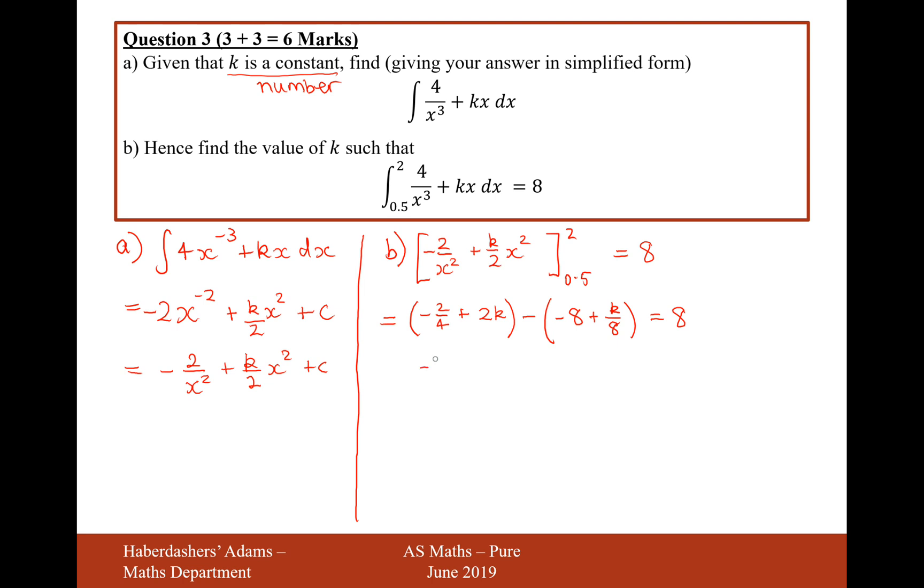So let's now simplify what we've got here. We've got minus 1 half plus 2k. Minus minus 8. That will give us a plus 8. And then minus k over 8 equals 8. So the first thing we might want to do is cancel out the 8s on both sides and move the half onto the other side. So that would be 2k minus k over 8 equals half.